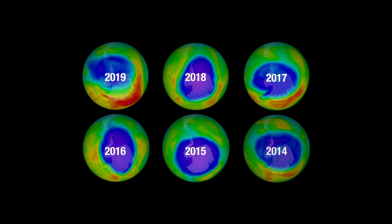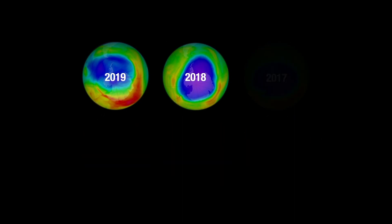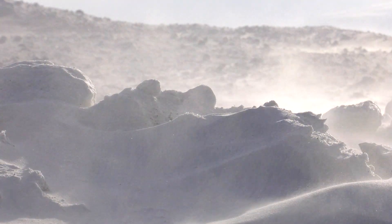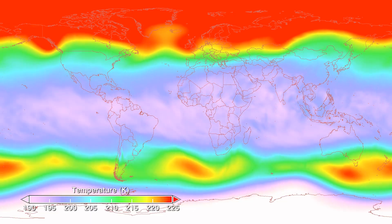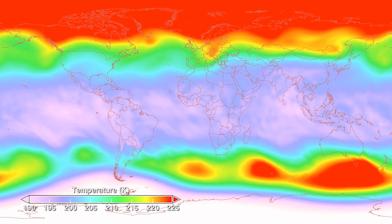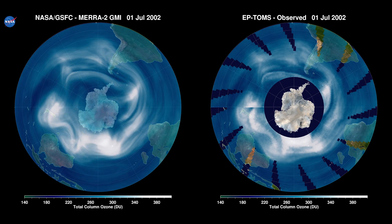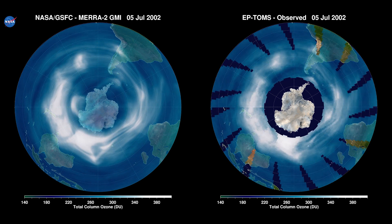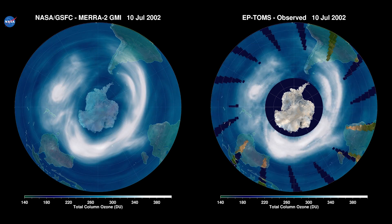So why is the ozone hole bigger and longer lasting in certain years? Well, it all comes down to weather. Just like some winters are colder and longer than others on the Earth's surface, the same goes for weather in the stratosphere. If the Antarctic stratosphere stays cold, the polar vortex and the ozone hole within it will persist. And in years with cold springtime temperatures, the polar vortex and the ozone hole are large.